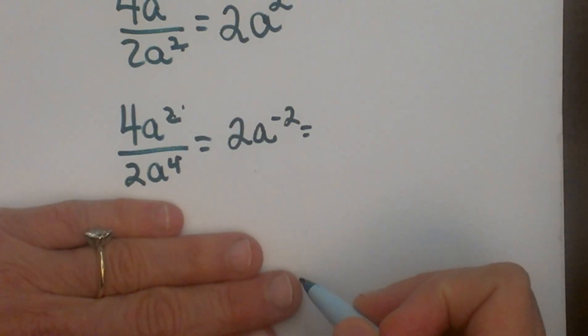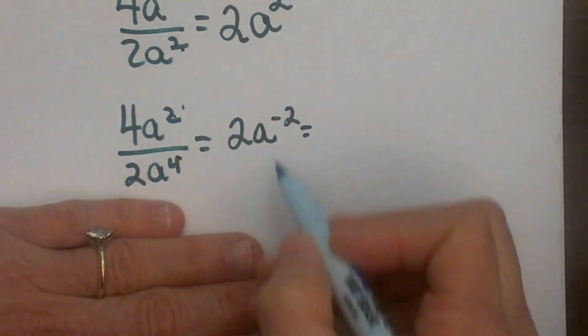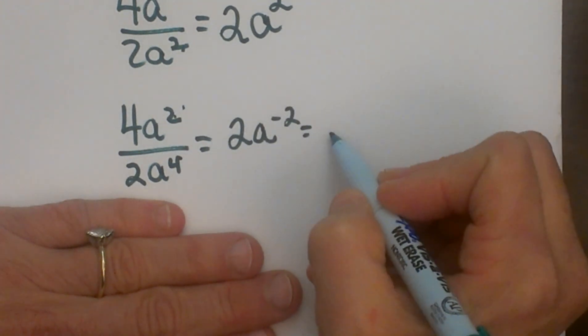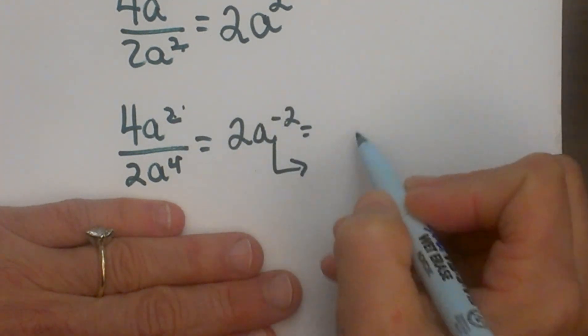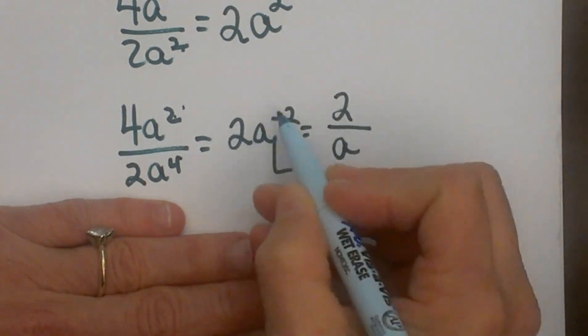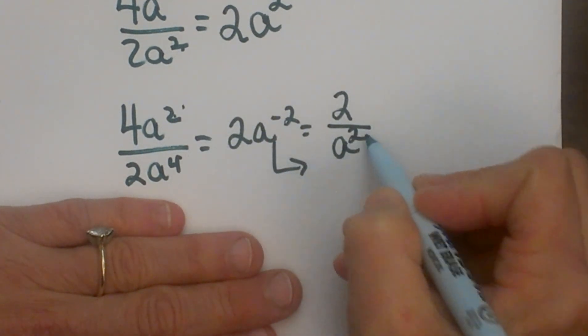So now we can't leave this negative exponent, so we have got to move that into the denominator. So any time you have a negative exponent, it moves positions. So we are going to move it to the denominator, and that becomes a². So that is our final answer.